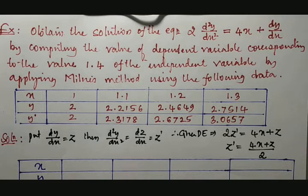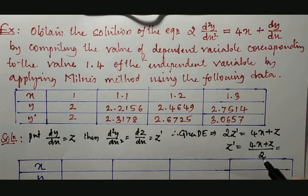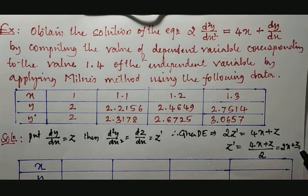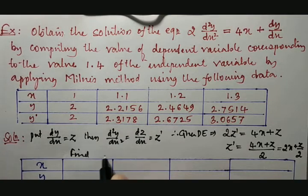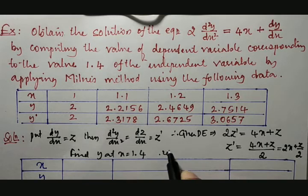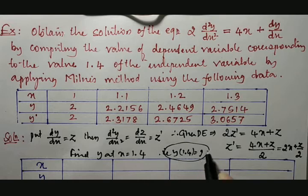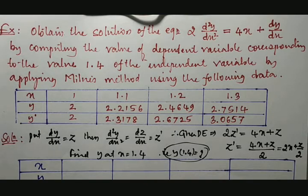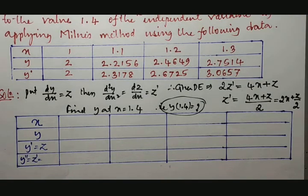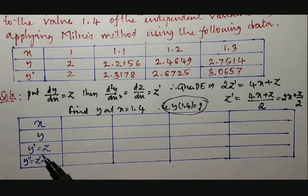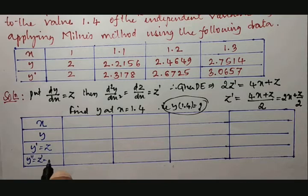This result can also be written as z' = 2x + z/2. We need to find the value of y at x = 1.4, that is y(1.4). We will utilize the given values and prepare a tabular column with columns for x, y, y' (which is z), and y'' (which is z'), where z' = 2x + z/2.